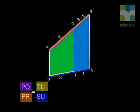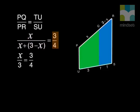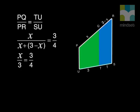Put in all the values you know for this length and see if you can calculate X. PQ is X and PR is X plus 3. TU is 3 and SU is 4. We can simplify this denominator: X minus X is 0, so we are left with 3. Using cross-multiplying, we get 4X equals 9, and so X is 2.25. Well done.